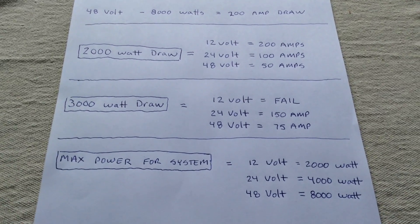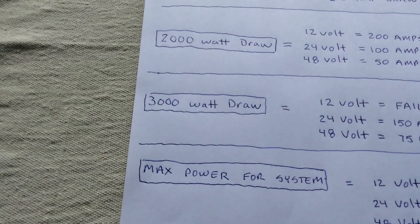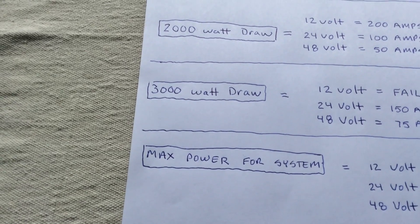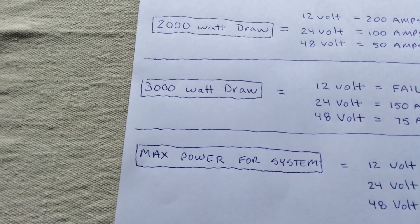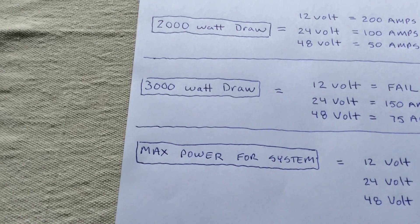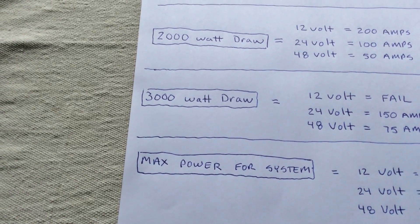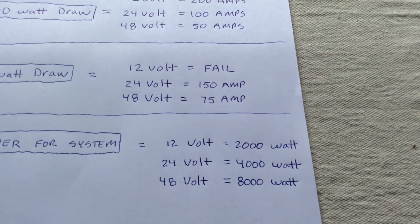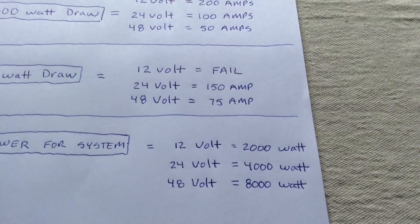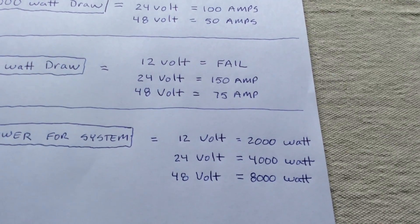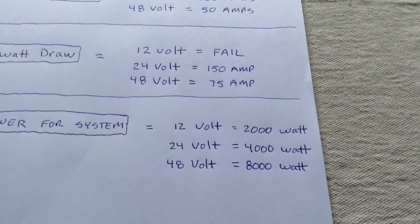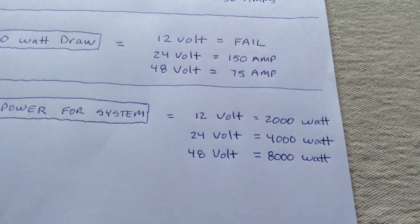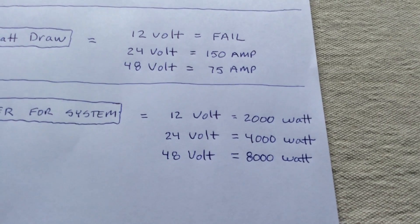So the max power for a system. Maximum power on your systems. So you build a system off-grid and you're going 12, 24, and 48. Your maximum amount of power you can utilize on that system in the biggest draws. On a 12 volt, about 2,000 watts. You're maxed out at 2,000 watts. On a 24 volt, it doubles. I can go to 4,000 watts. 48 volt, you can go all the way up to 8,000.